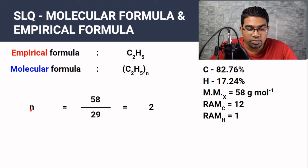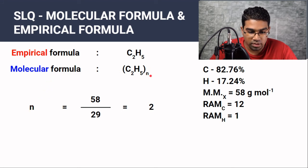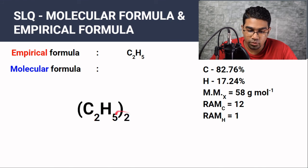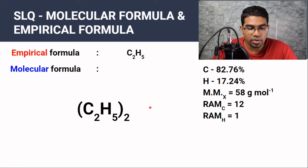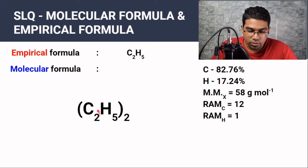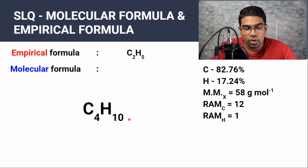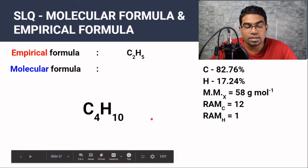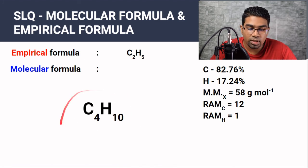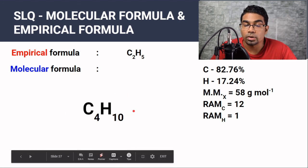Now that we have N = 2, we substitute back: C2H5 × 2 gives us 2×2 = 4 carbons and 5×2 = 10 hydrogens. So the molecular formula of compound X is C4H10.